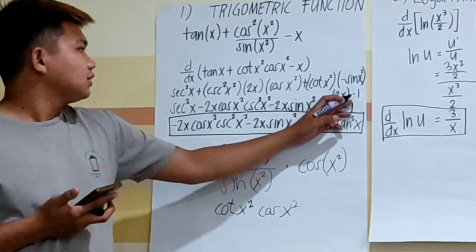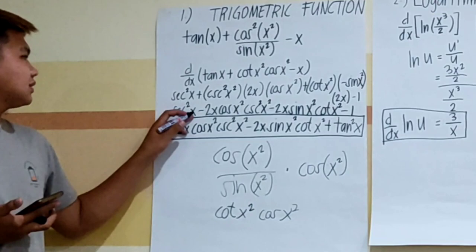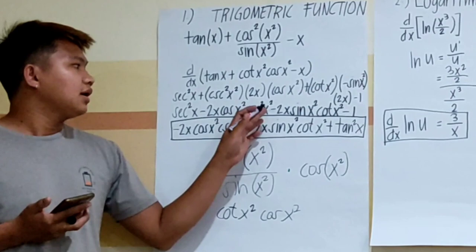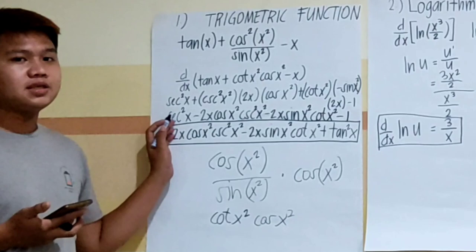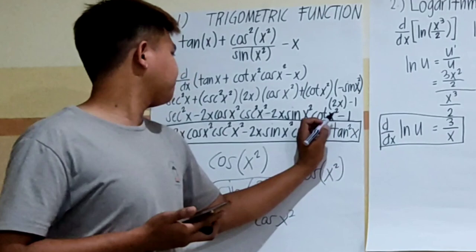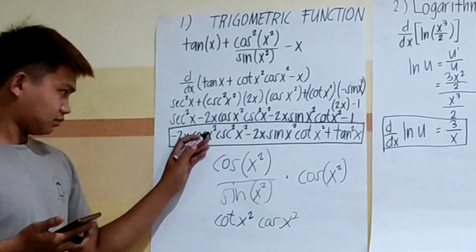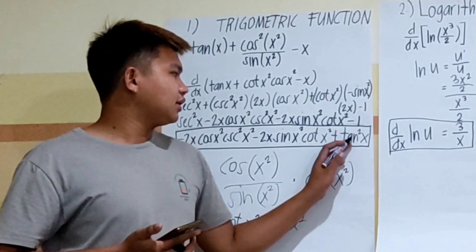The derivative of x is equal to negative 1. Copying the result: secant²(x) minus 2x·cos(x²)·secant²(x²) minus 2x·sin(x²)·tangent(x²) minus 1. This is not yet the final answer; we need to simplify. The simplified final answer is secant²(x) minus 1, minus 2x·secant(x²).